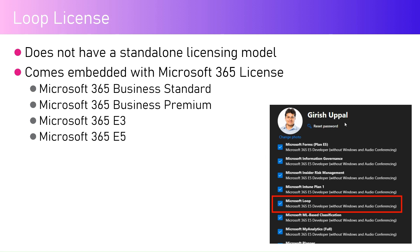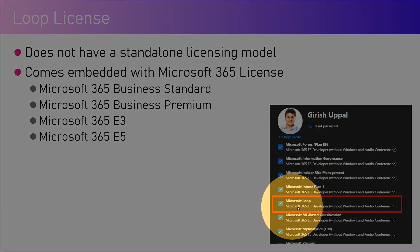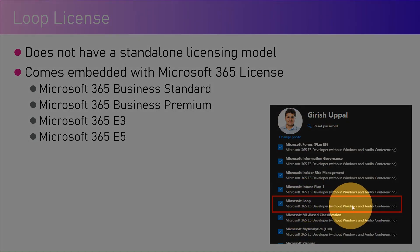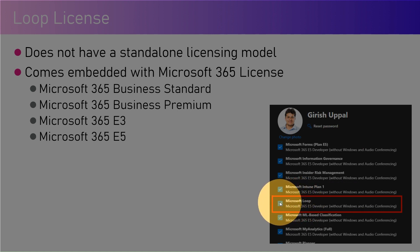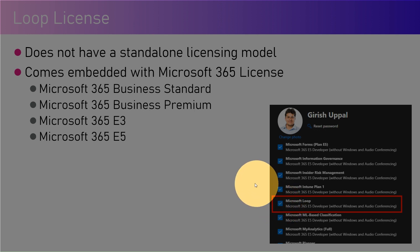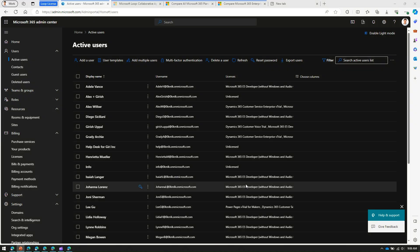As you can see in the screenshot, if you navigate to a user in the admin center, you can see a component called Microsoft Loop, which comes as part of the license. I have an E5 developer license, so it shows Microsoft 365 E5 Developer. If I tick this box, Microsoft Loop licensing applies to me. If I untick it, I cannot use the Loop component.